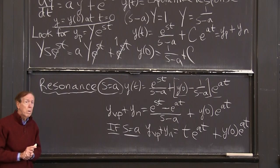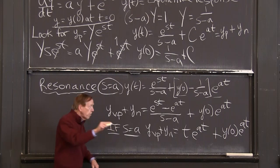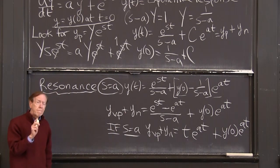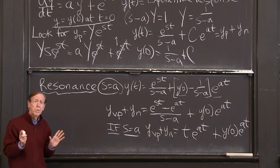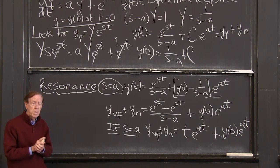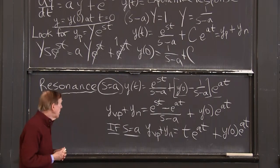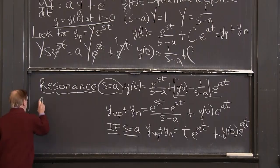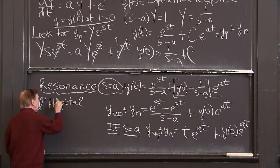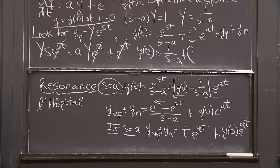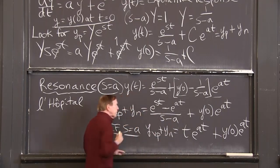Do you want to know how this comes out of this as s approaches a? Let me take three minutes to tell you about that. It's L'Hopital's rule. Do you remember from calculus? 0 over 0, the way to deal with that was called by this guy's name, L'Hopital. Hospital, I guess. Probably hospital in French.